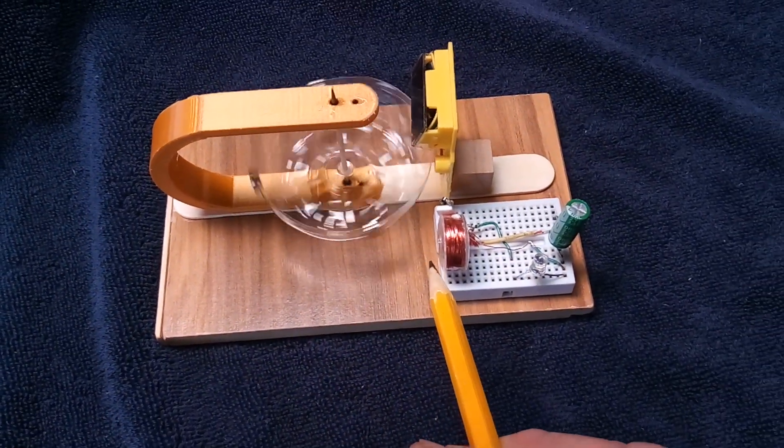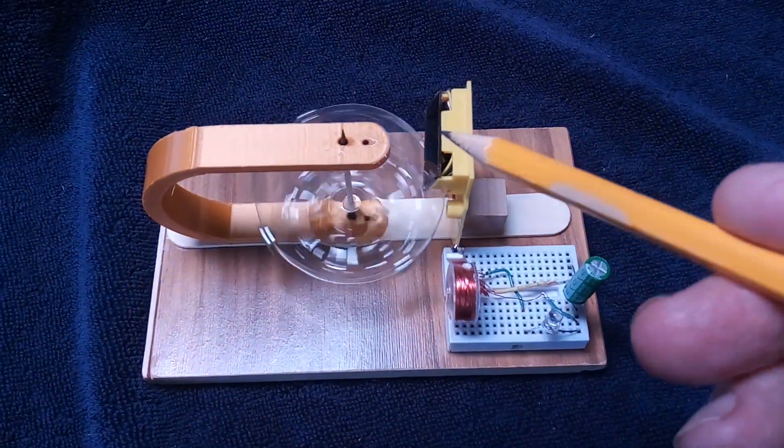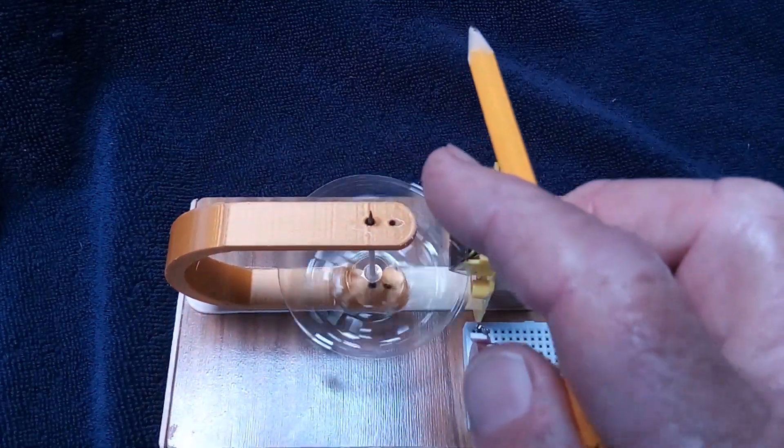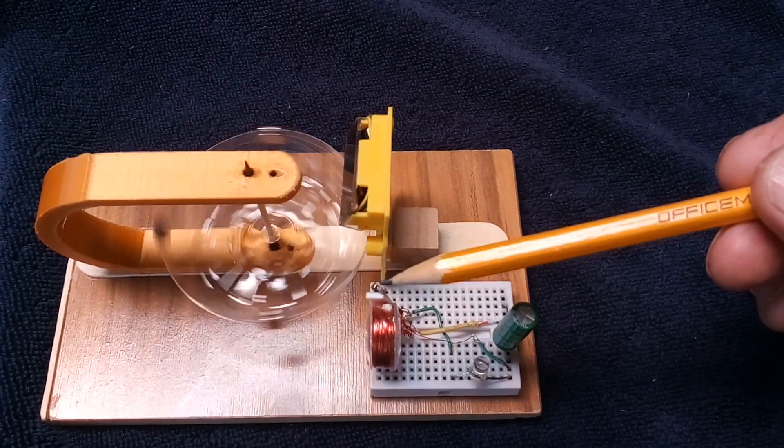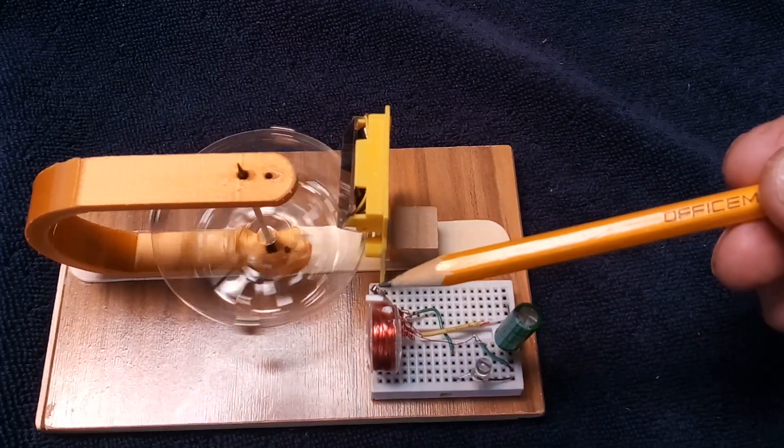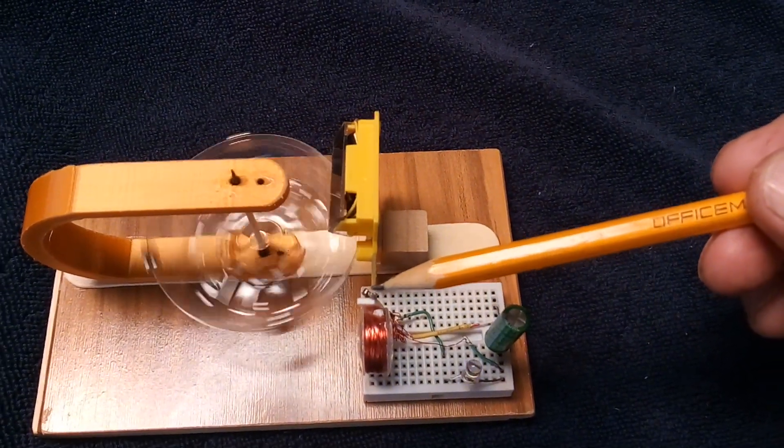It's pulling the magnets this way, and then this one here is shoving it that way, so the thing goes round and round. That reed switch is usually a problem because it attracts the magnet, but in this case...